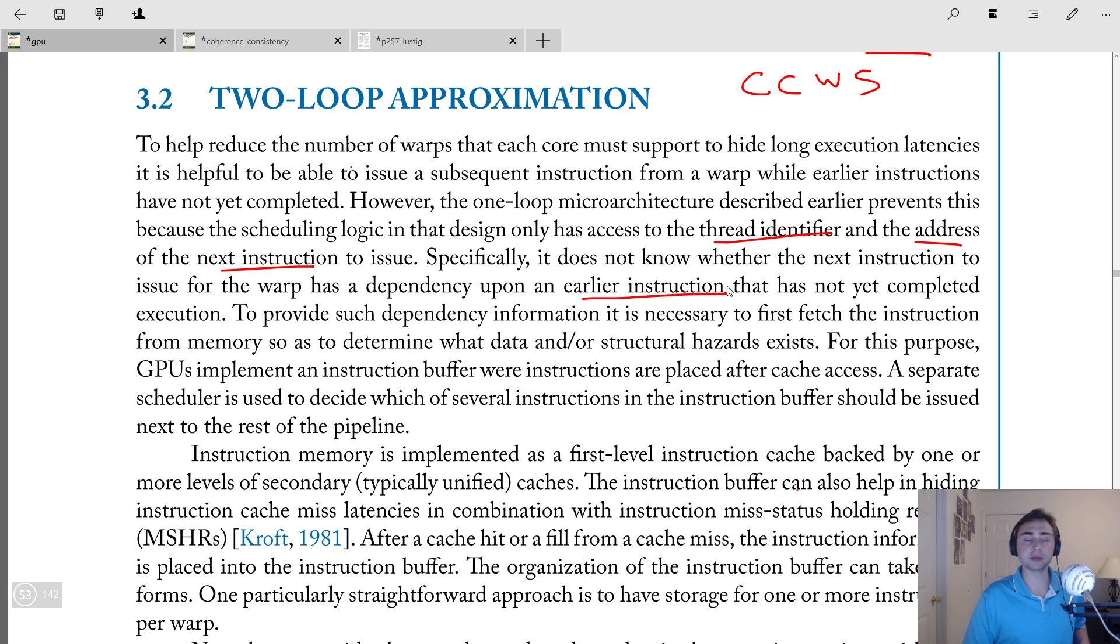So why is this a problem? Well, it turns out that it's a problem because if you want to hide a long latency instruction, and you don't have this dependency information, that would mean that you would have to have a large number of warps on a single core to select between and pick one instruction from. As we already said, massively multi-threaded, the nature of these things, you end up having a ton of state you have to keep around. And so, if you all of a sudden are requiring to have even more and more and more warps active at one point to issue from in order to hide latency, this becomes a problem because that ends up being a lot of state.